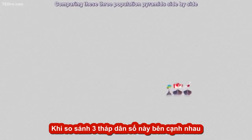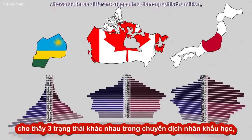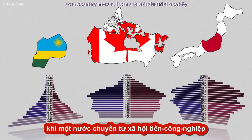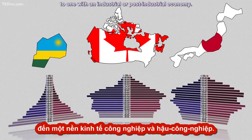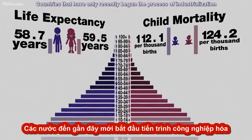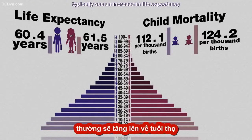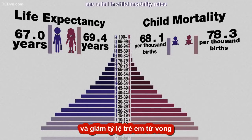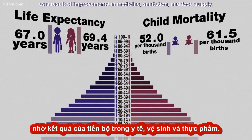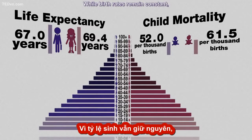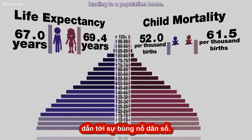Comparing these three population pyramids side by side shows us three different stages in the demographic transition, as a country moves from a pre-industrial society to one with an industrial or post-industrial economy. Countries that have only recently begun the process of industrialization typically see an increase in life expectancy and a fall in child mortality rates as a result of improvements in medicine, sanitation, and food supply, while birth rates remain constant, leading to a population boom.